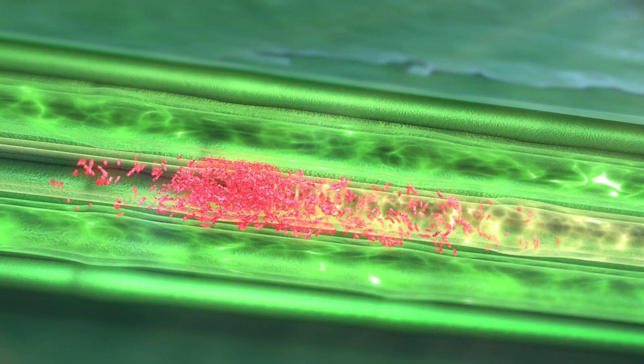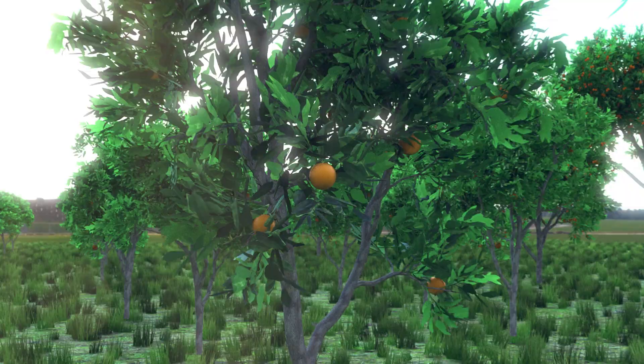The psyllid flies away. The bacteria multiply and block the flow of nutrients. Without the nutrients, the tree's leaves turn yellow and the oranges no longer ripen.